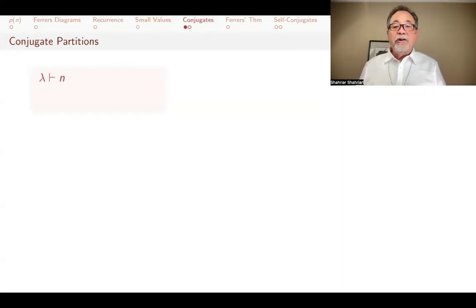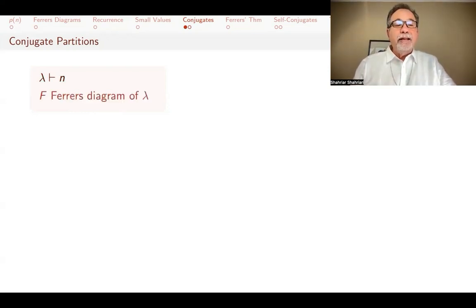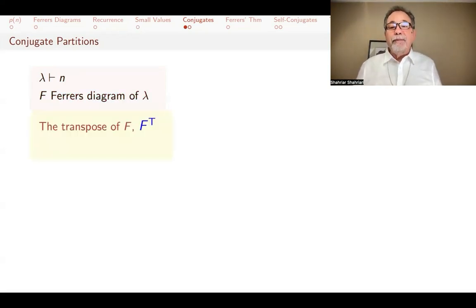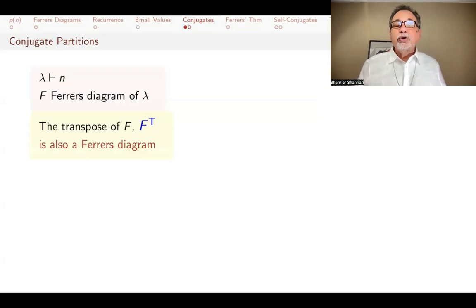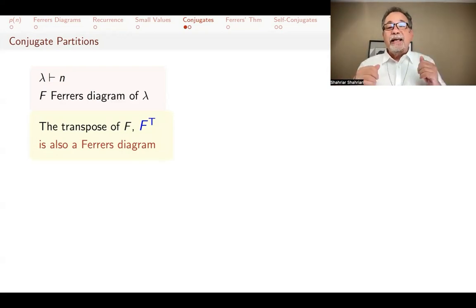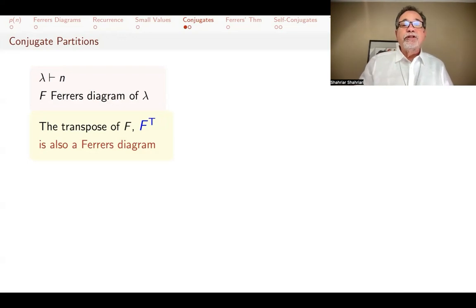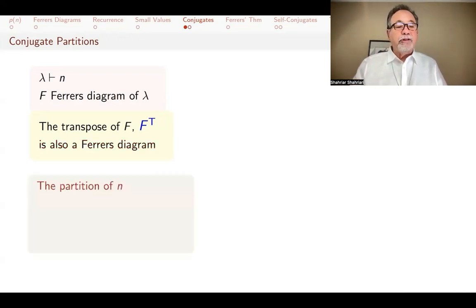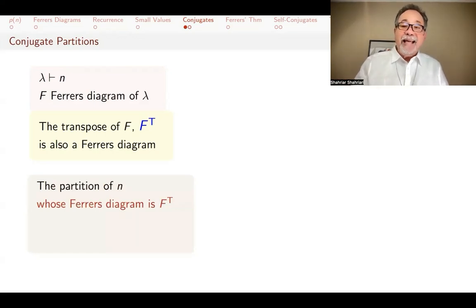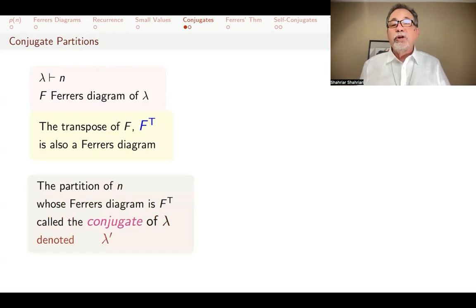Now I want to show how thinking about Ferrer's Diagrams helps us come up with results about partitions. If lambda is a partition of n with Ferrer's diagram F, and you transpose F — taking the first column and making it a row, the second column into a row, and so forth — that is also a Ferrer's diagram. This works because since everything is left-aligned, the second column never has more rows than the first. The transpose of a Ferrer's diagram is also a Ferrer's diagram, and the partition whose diagram is that transpose is called the conjugate of lambda, denoted lambda prime.